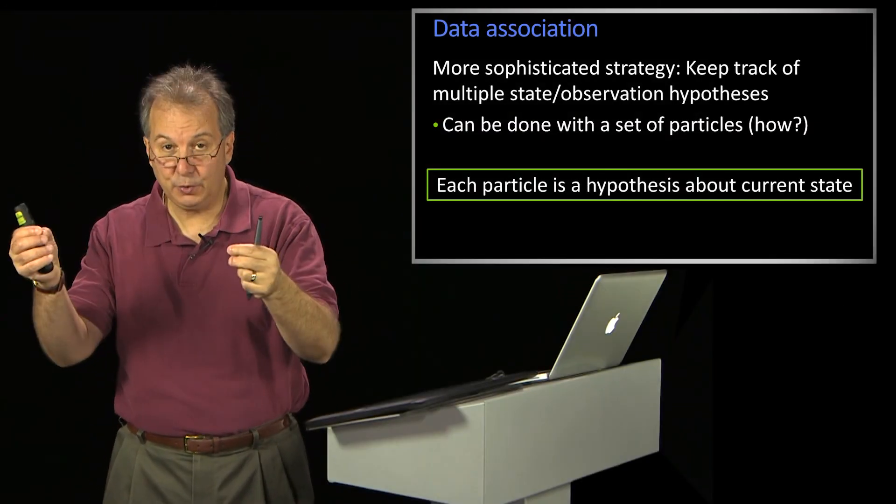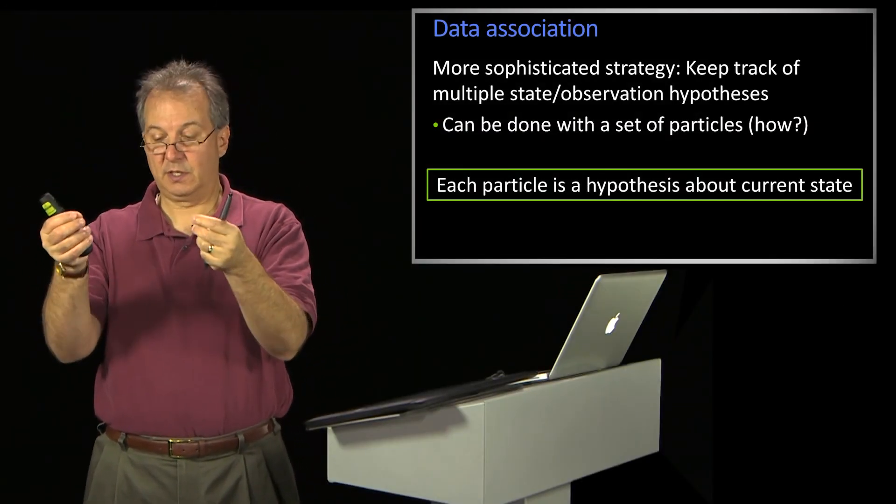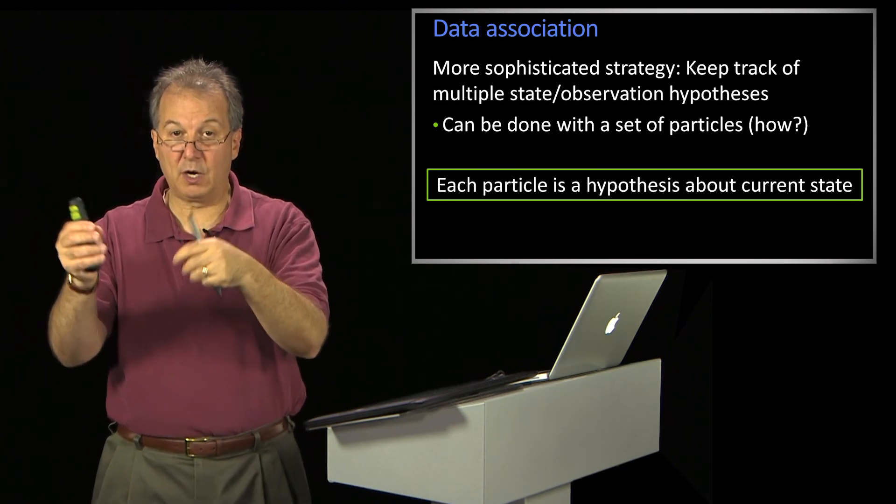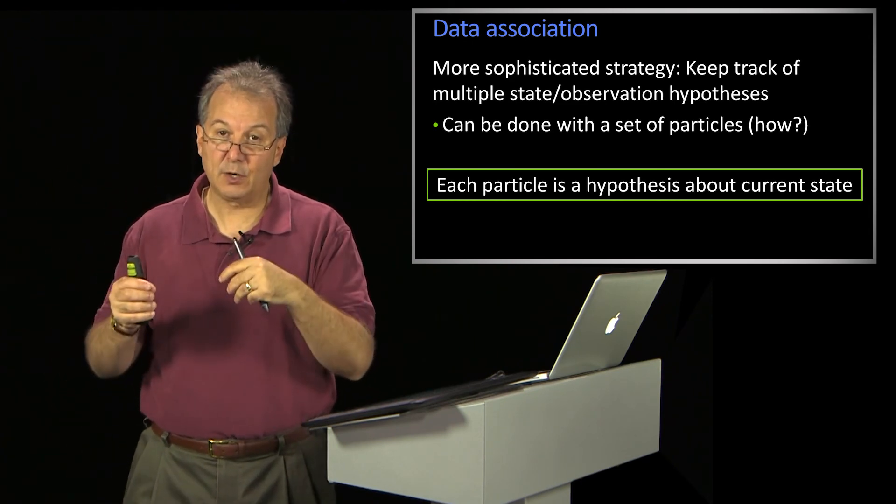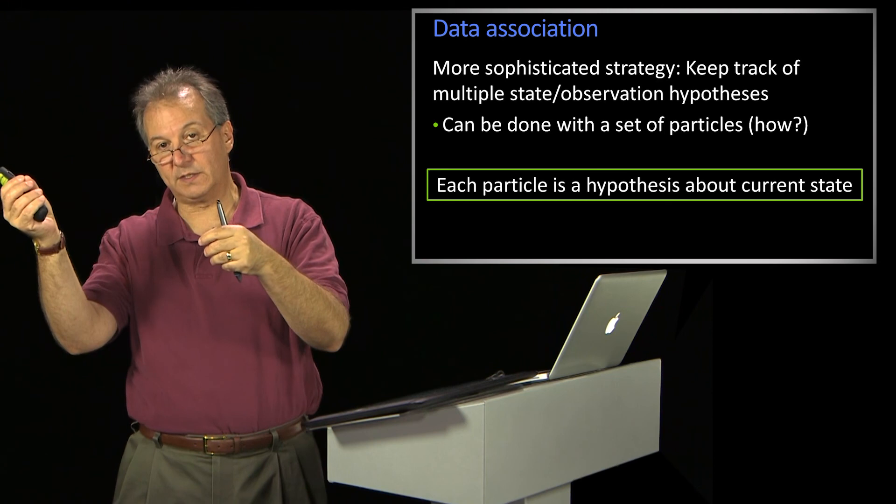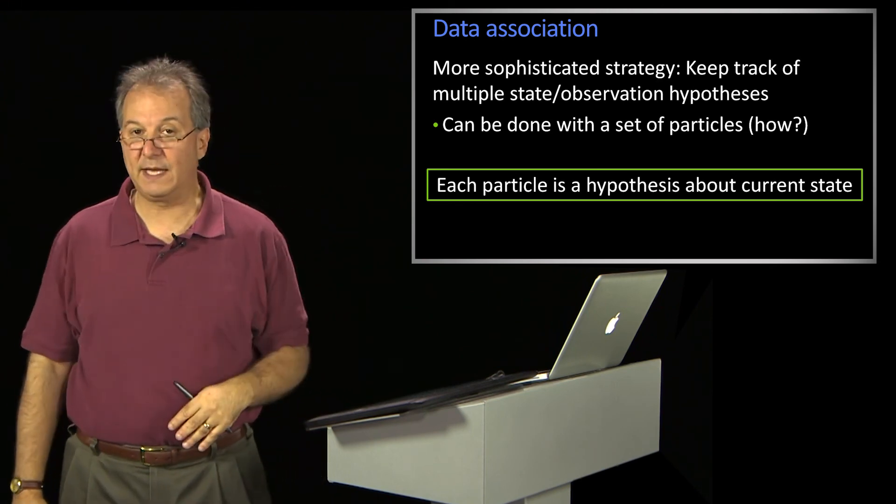oh, there are two such objects, and here's where they are. Or a particle could say, there is one such object, and this one is not the right one, et cetera. So you can do that using particle filtering.